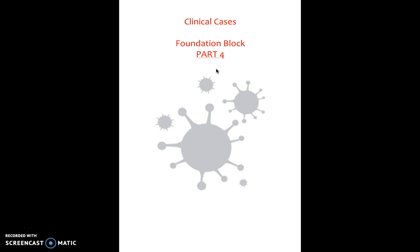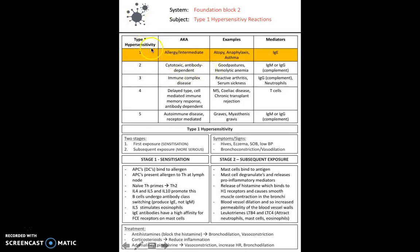Starting with hypersensitivity reactions, these can be broadly classified into five subcategories, but today we're focusing on type 1 hypersensitivity. Examples of type 1 hypersensitivity include atopy, anaphylaxis, and asthma — these are amongst many examples. Type 1 reactions are the most common and are IgE mediated. We can divide these into a first exposure, which we describe as sensitization, and then a second or subsequent exposure, which is more serious.